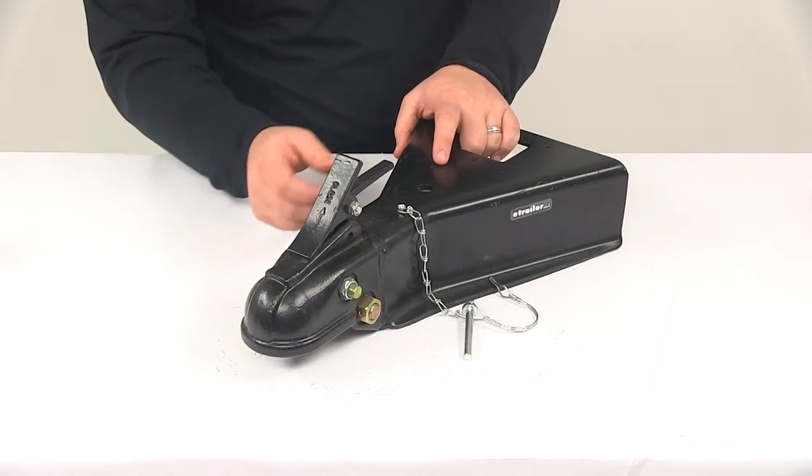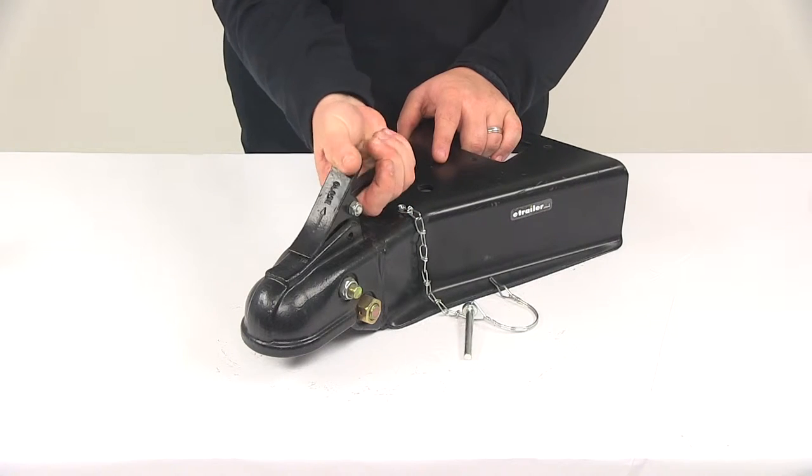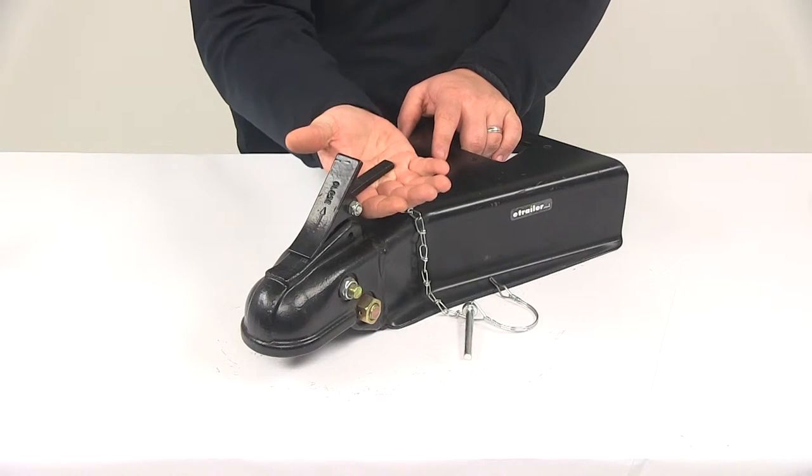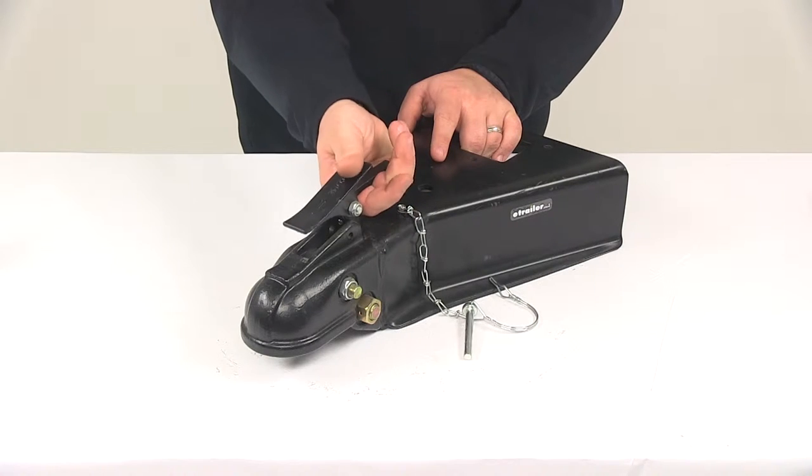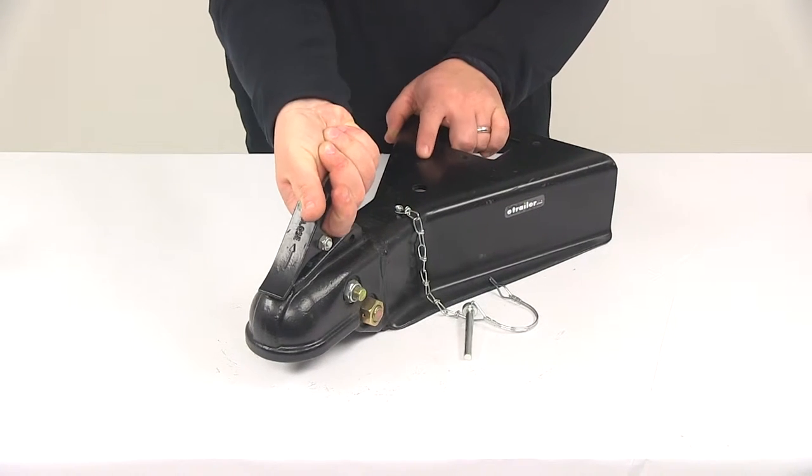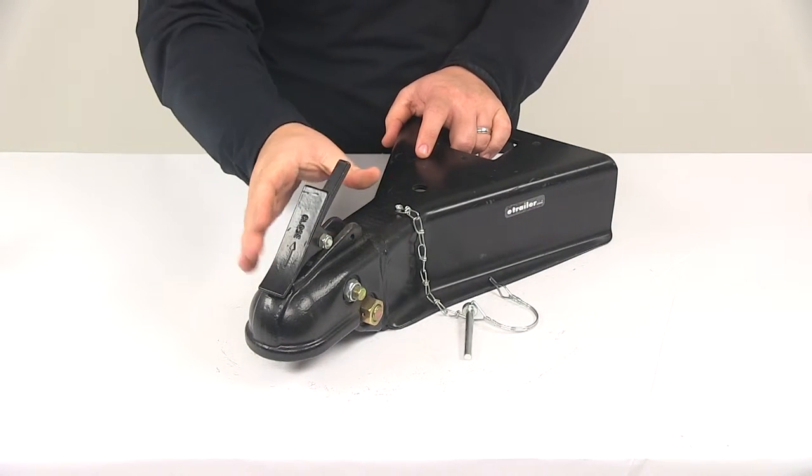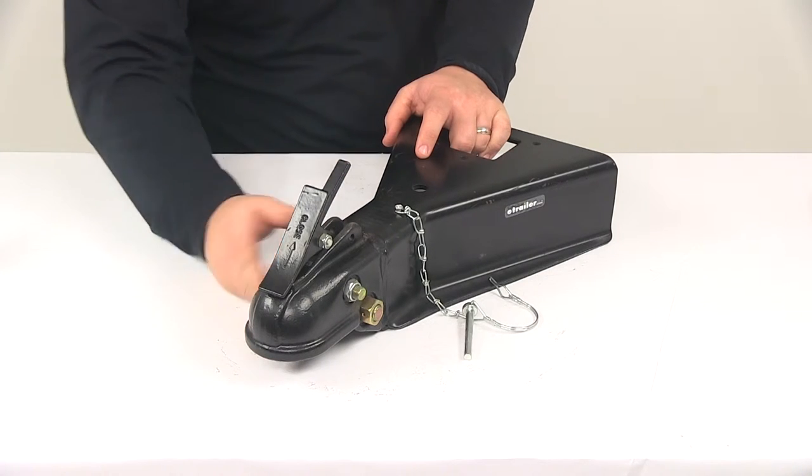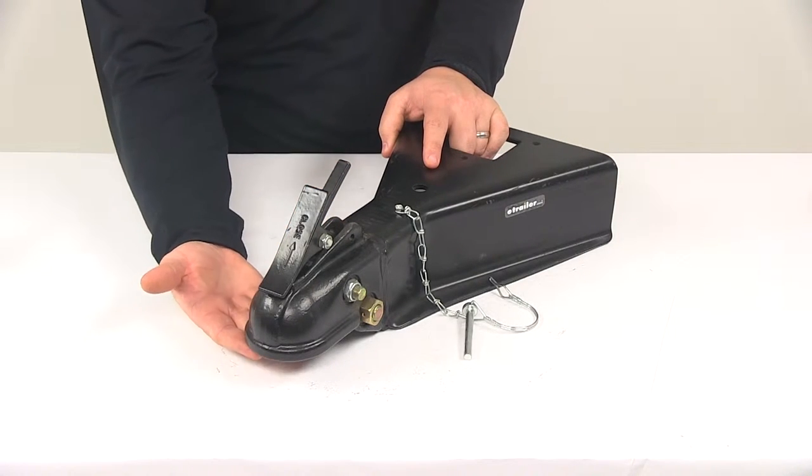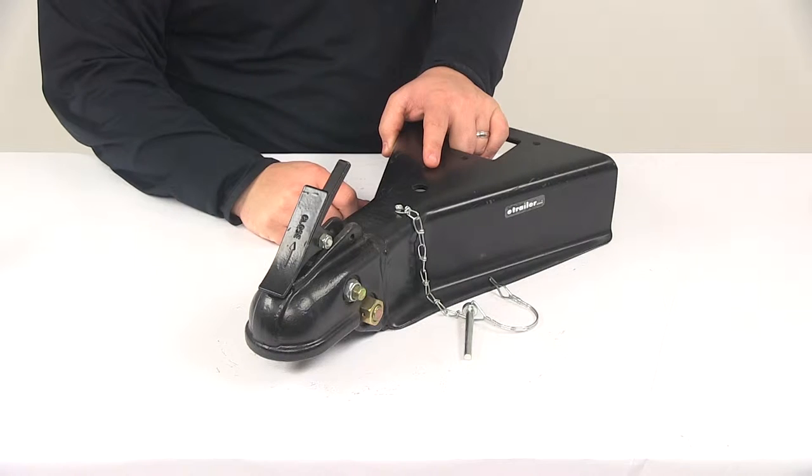Then what you would do is you would squeeze these two pieces together. So this is basically just like a grip bar. It allows you to get some leverage. Squeeze this down, lift it up until it snaps into position and it's going to hold itself in the open position. This would allow you to connect it to your 2 and 5/16 inch hitch ball.